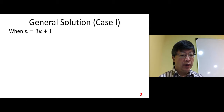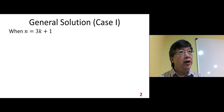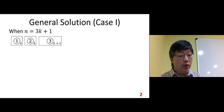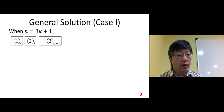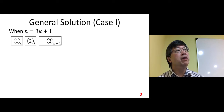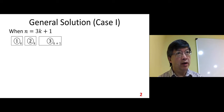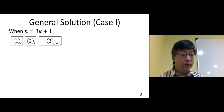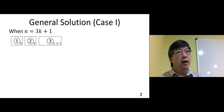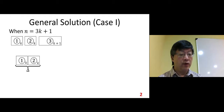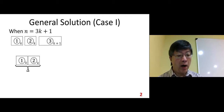General solution, case one: in this case we consider n equals 3k plus 1. Based on the balancing principle, we try to divide the total number of coins into three piles, as close to evenly distributed as possible. So here we make the three piles: k, k, and k plus 1.